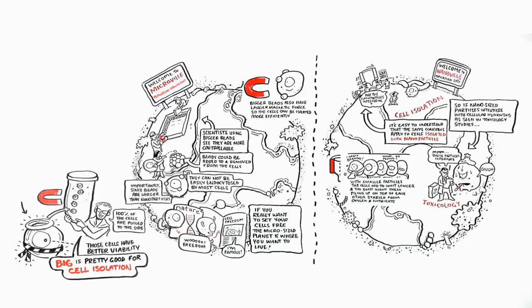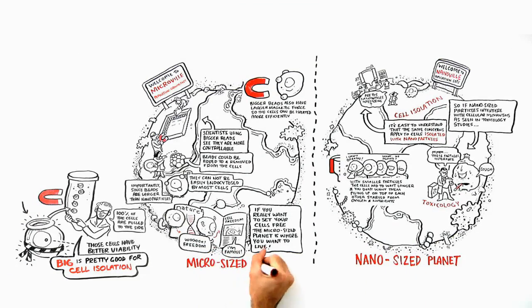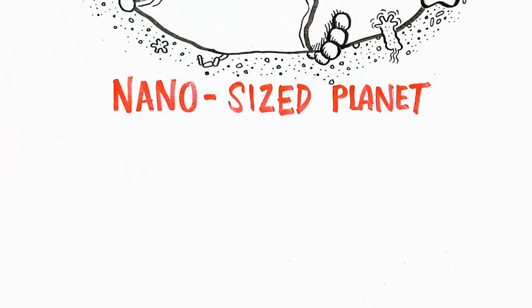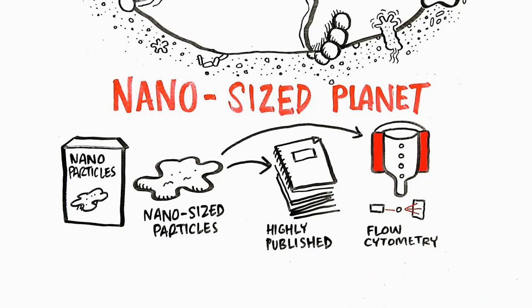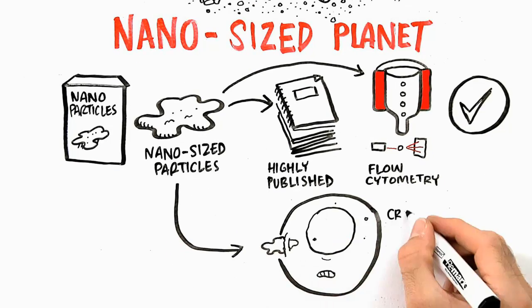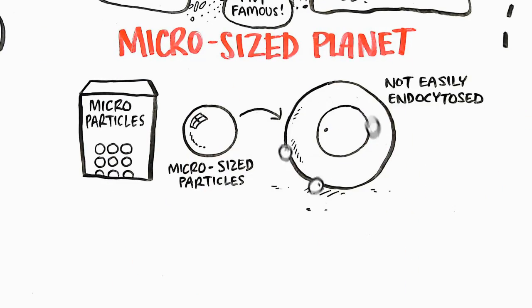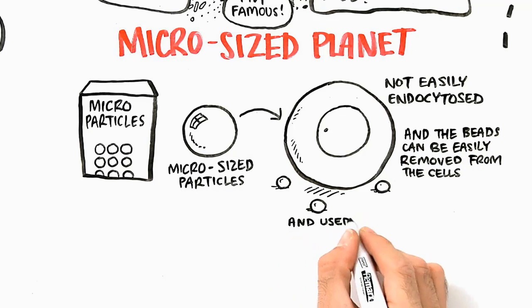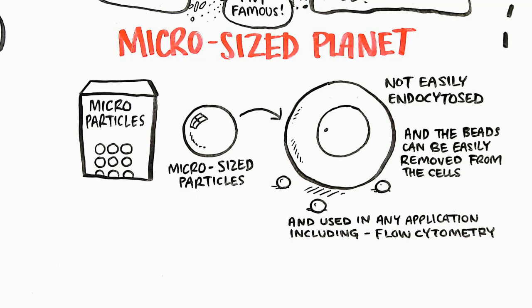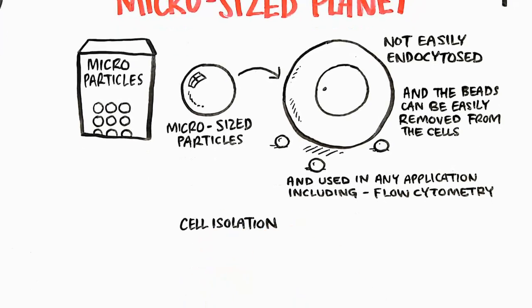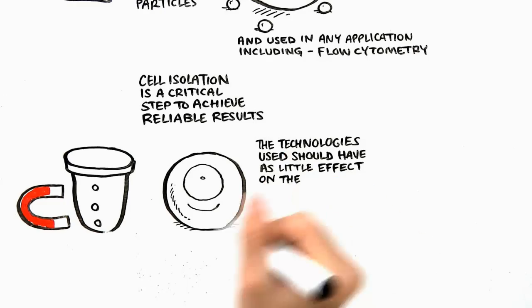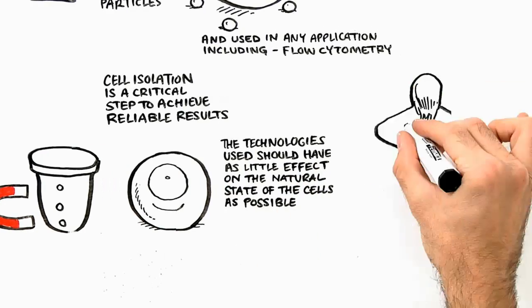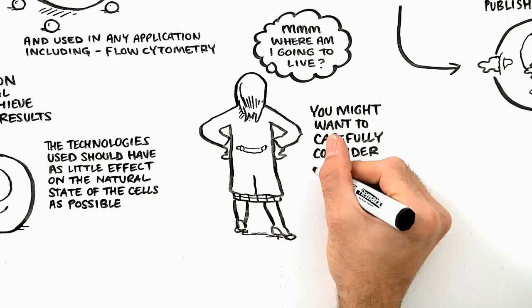So here is where cell isolation is — two planets, one nano-sized and one micro-sized. Both have their advantages and disadvantages. Nano-sized particles have been highly published, and historically, this was the only technology that worked well with flow cytometry. But nanoparticles cross the membrane and have been demonstrated to impact cellular mechanisms. Micro-sized particles are not easily endocytosed, the beads can be removed from the cells, and then the cells can be used in any application, including flow cytometry. Immunologists have recognized that cell isolation is a critical step to achieve reliable results. The technology used should have as little effect on the natural, physiological state of the cells as possible. Knowing this, you might want to carefully consider which planet you want to live on.